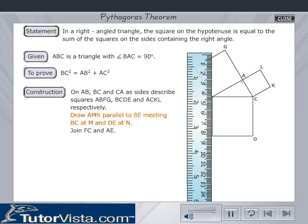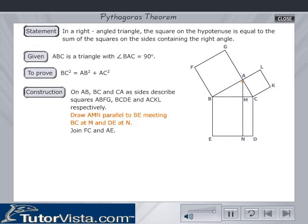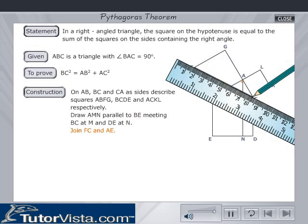Draw AMN parallel to BE, meeting BC at M and DE at N. Join FC and AE.